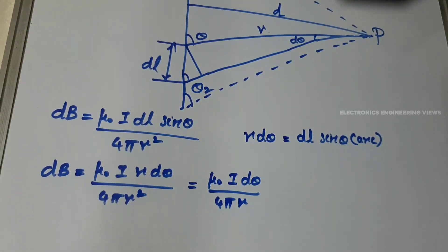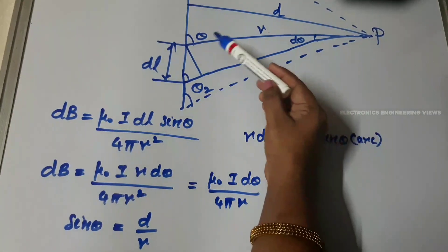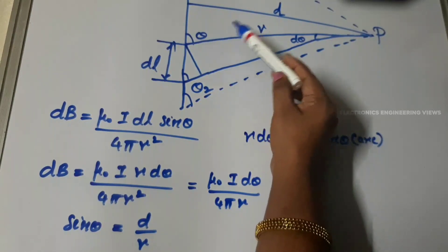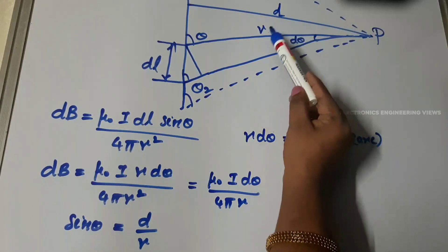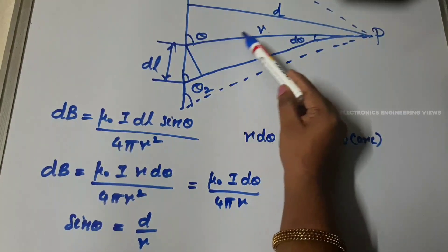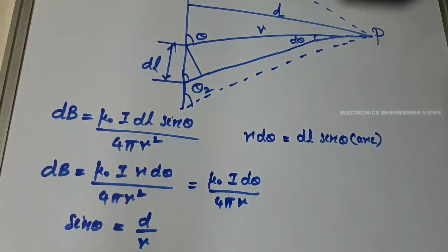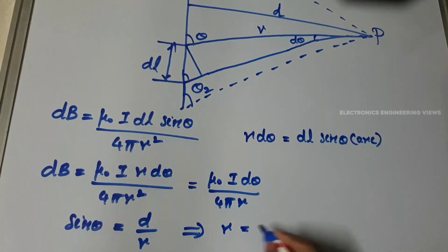From this figure, sinθ is written as d divided by r. By using Pythagoras theorem, sinθ is equal to opposite side divided by hypotenuse — the opposite side is d and hypotenuse is r. So sinθ equals d divided by r, from which r is equal to d divided by sinθ.